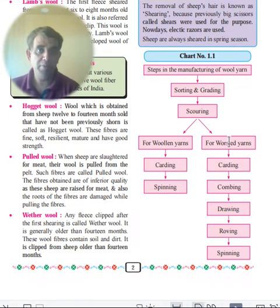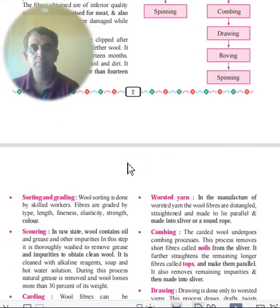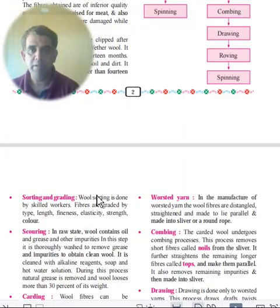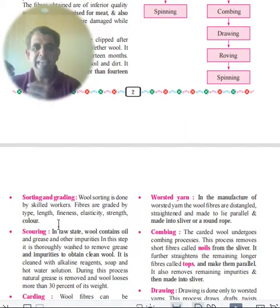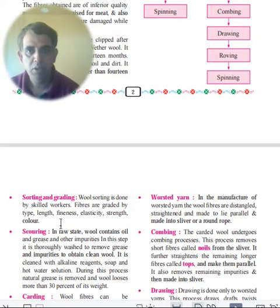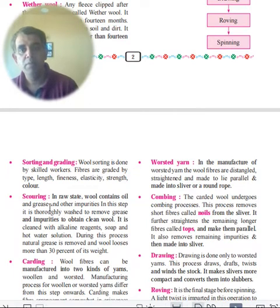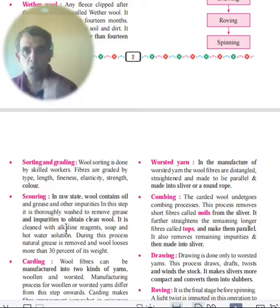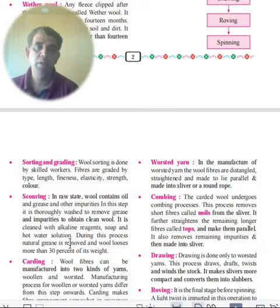Sorting: skilled workers sort wool by type, length, fineness, elasticity, strength, and color. Scouring: wool contains oil and impurities, which are removed using alkaline agents, soap, and hot water. This process removes grease but the wool loses about 30% of its strength during scouring.